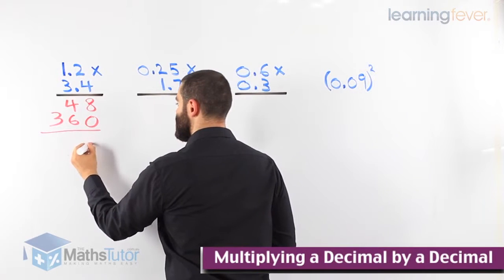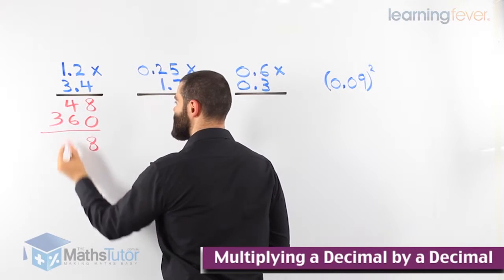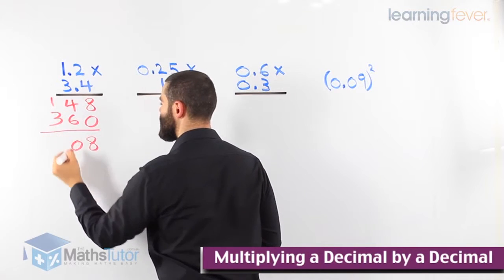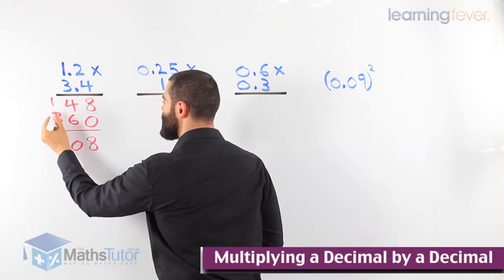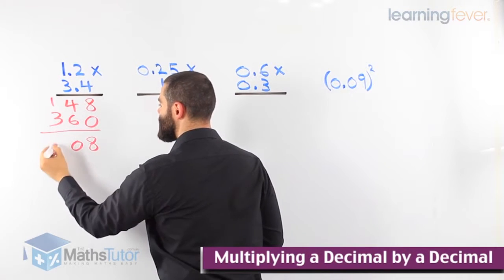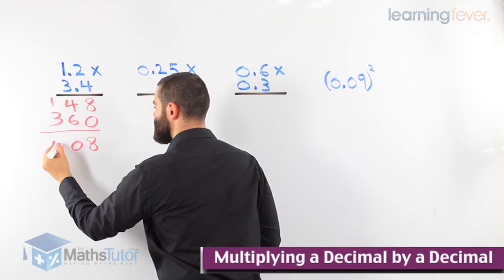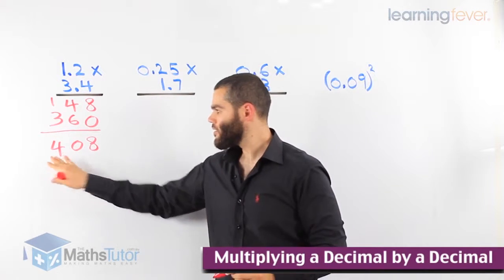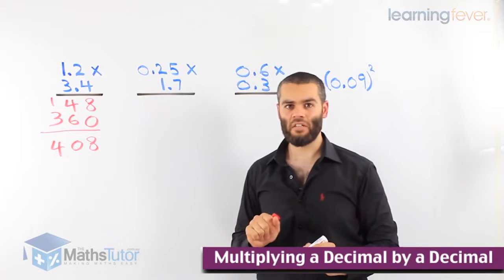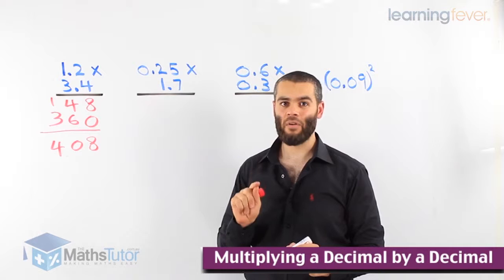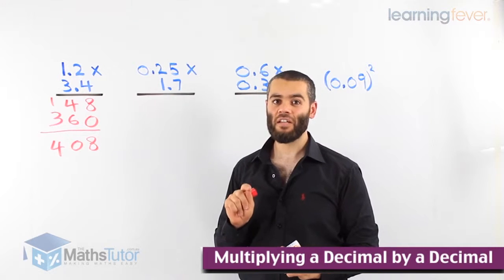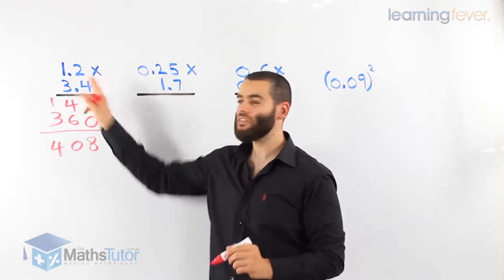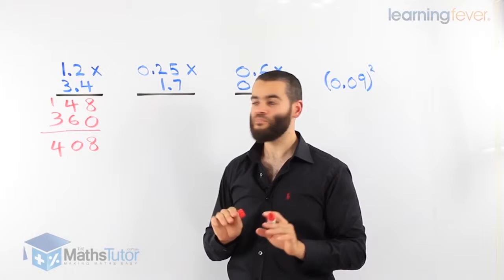8 plus 0 is 8. 4 plus 6 is 10. We carry the 1. 1 plus 3 is 4. So we've got our answer. However, we said we disregard the points just for now.